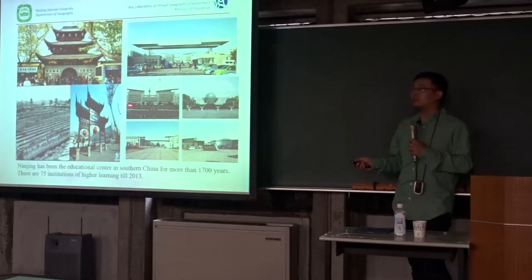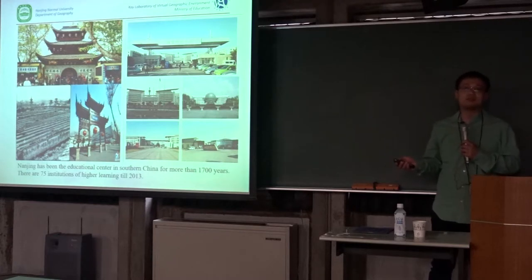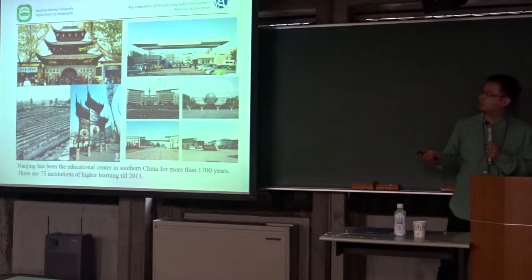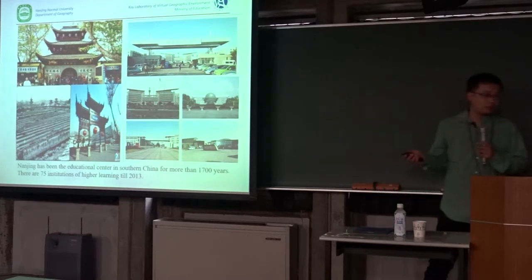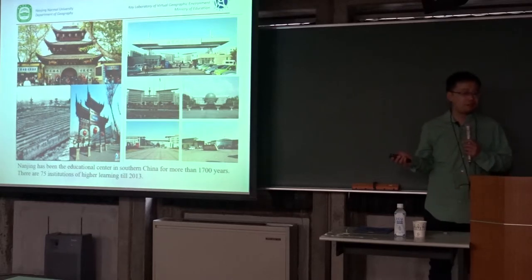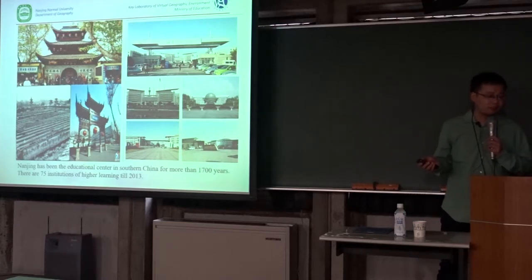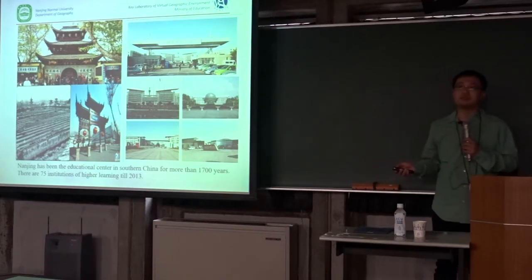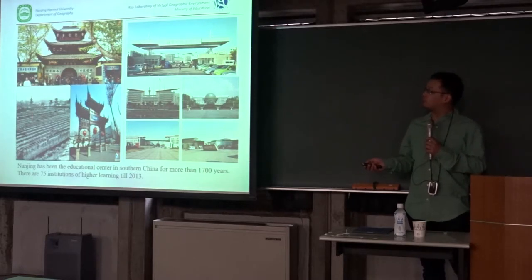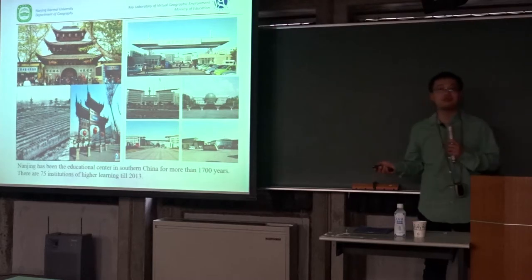Nanjing is a city that, in both old days and current days, has been a center of education. This is the famous Jiangnan Examination Hall, used for provincial examinations — students from Jiangsu province and Anhui province would come to take their examinations here. There are already more than 75 different colleges and institutions in Nanjing.